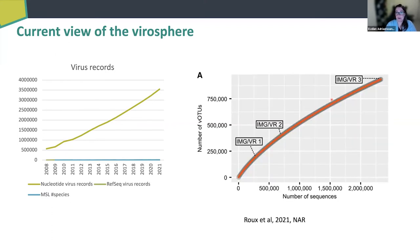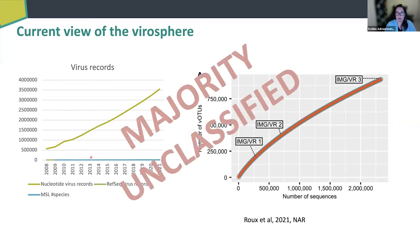We also have the IMG/VR database, with the third release nearing a million VOTUs and almost 3 million sequences. If you compare that to the number of classified species, you can see that the majority is unclassified — but that is not necessarily an issue if you know how to deal with this.